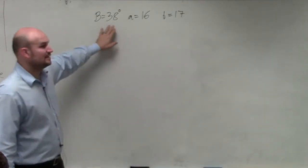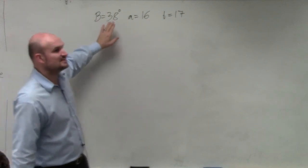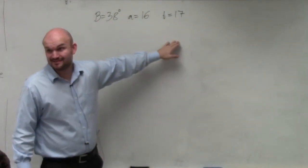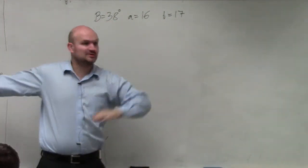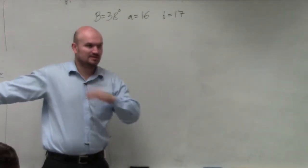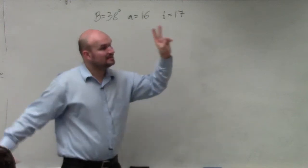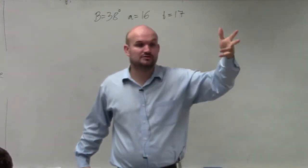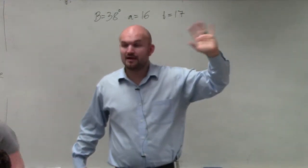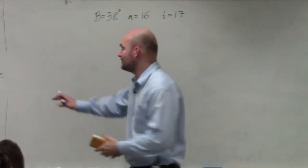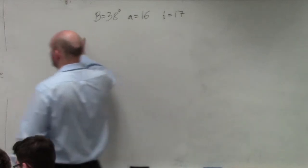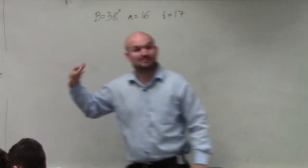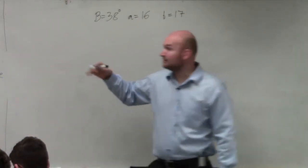So first thing, I notice this is angle-side-side — the ambiguous case. That means I could have 0, 1, or 2 triangles. And also, I'm going to want to create my ratio with my sides on top, because I'm going to be solving for an angle.